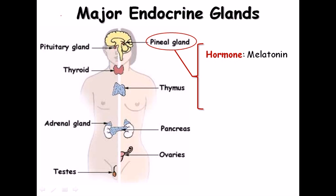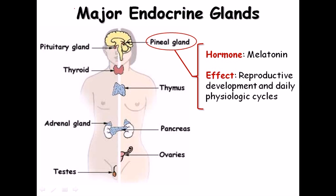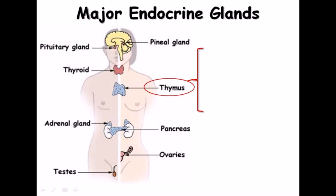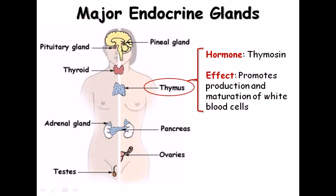Looking at each gland in detail: the pineal gland secretes melatonin, which helps in reproductive development and maintaining daily physiological cycles — the circadian rhythm. The thymus secretes thymosine, which promotes the production and maturation of white blood cells, important for fighting infections.